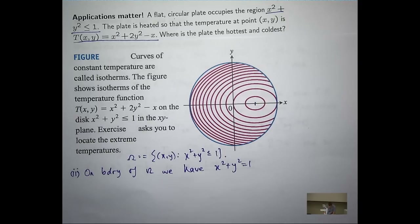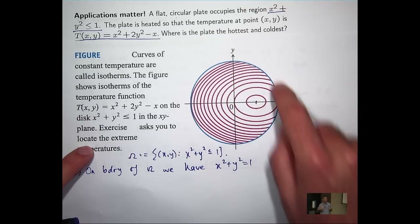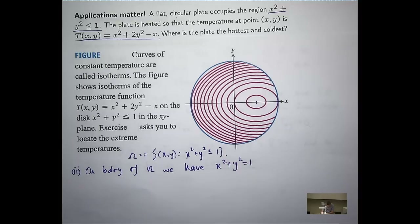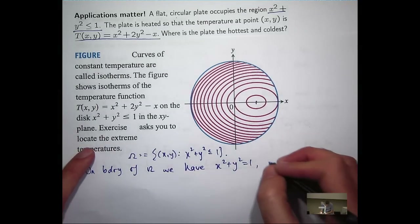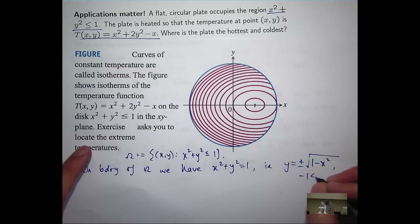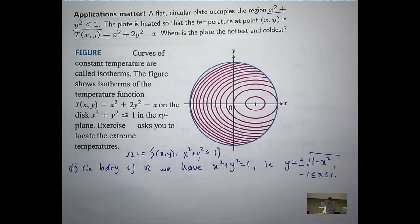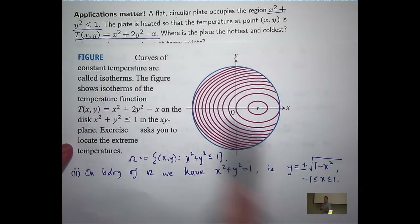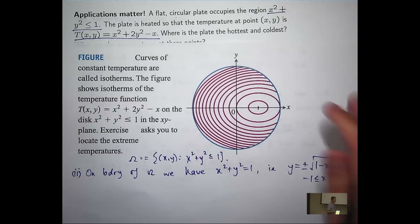Along the top curve, y equals positive root (1 minus x squared). Along the bottom curve, y equals negative root (1 minus x squared). So on the top half, we've got y equals root (1 minus x squared) for x between minus one and one. I'm going to replace y with positive root (1 minus x squared) and form a function of x — let's call it g.